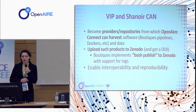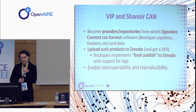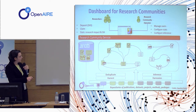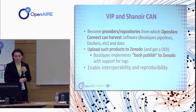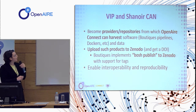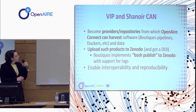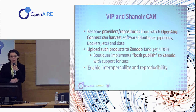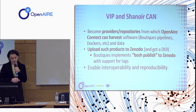Now that we have all that, how do we link everything together? The two examples — the Virtual Imaging Platform and the Canoire database — can do two things. First, they can become providers themselves, from which OpenAirConnect harvests software data such as Boutiques pipelines and Docker containers. Second, these platforms can upload such products to Zenodo and in exchange get a DOI. This is quite easy to do through Boutiques, since Boutiques allows us to publish things to Zenodo. By doing these two things, I believe we will enable interoperability and reproducibility, because other platforms and users may use the software and data to reproduce results.